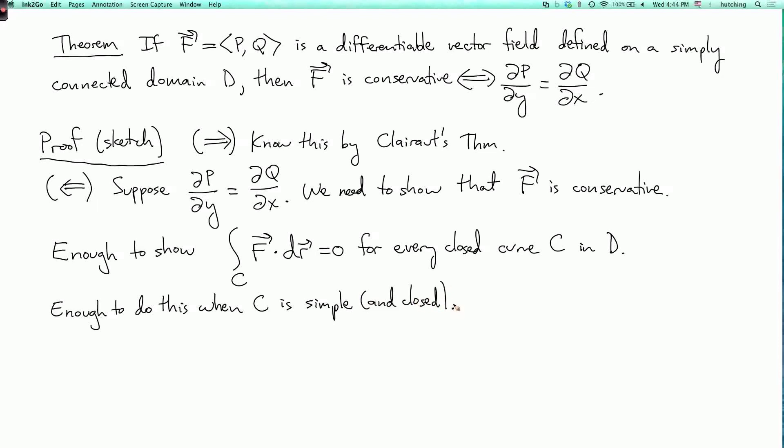That requires a bit of explanation. One way you can think about it is if you have a curve which is not simple, then you could divide it up into simple curves. Or a better way to say it is if you look at the proof that if integral over C is zero for every closed curve, then f is conservative, then in that proof you actually only really need to use certain simple curves, in fact certain rectangles. Anyway, let's just see why this is true when C is simple.